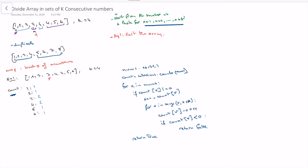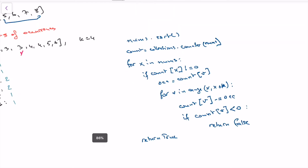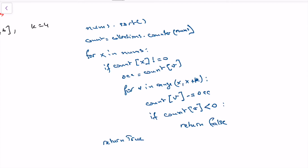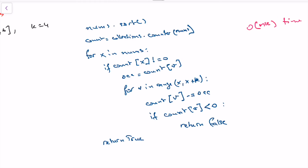Just to look at the time complexity: we have one outer for loop — that's O(n) — and inside, one for loop of k, so overall this is O(n*k). In terms of space complexity, we are using this count map, so space would be O(n).